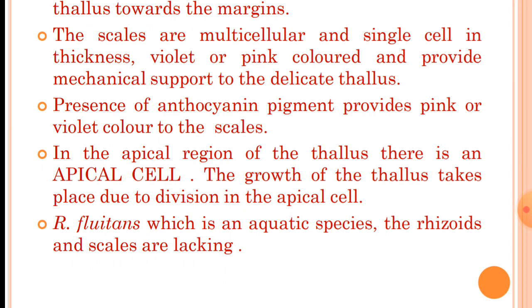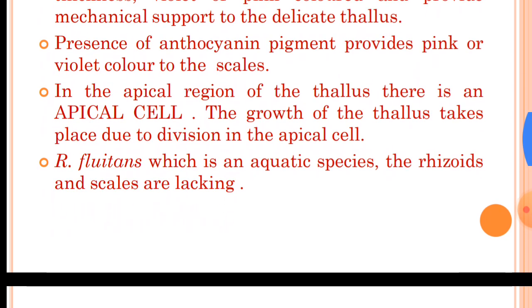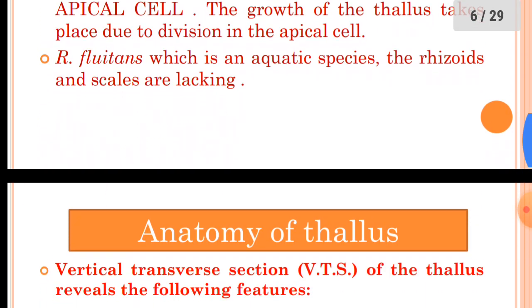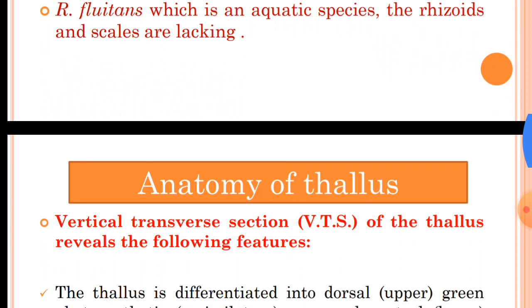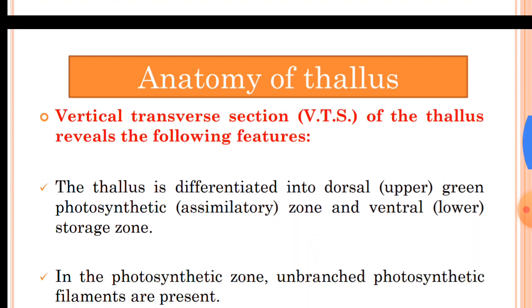There is one species, Riccia fluitans, which is aquatic, and in this species there is absence of rhizoids and scales.